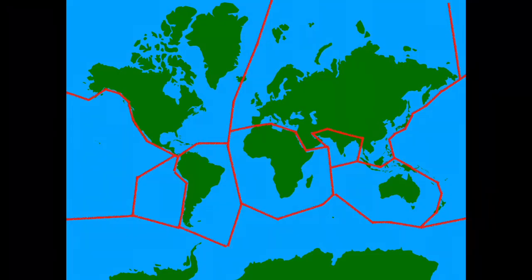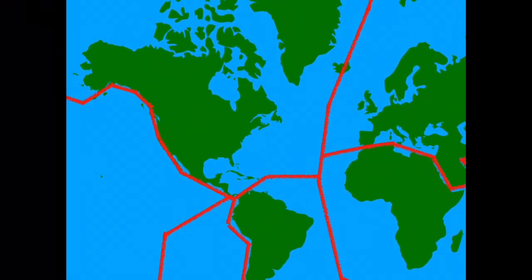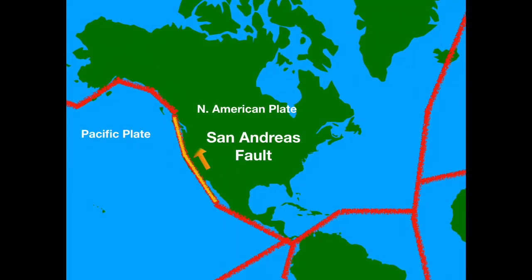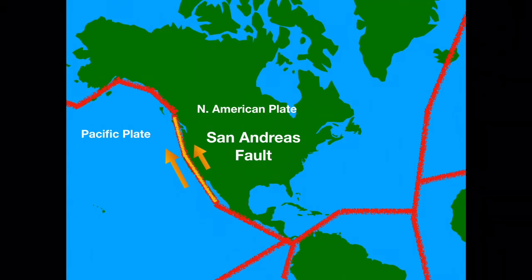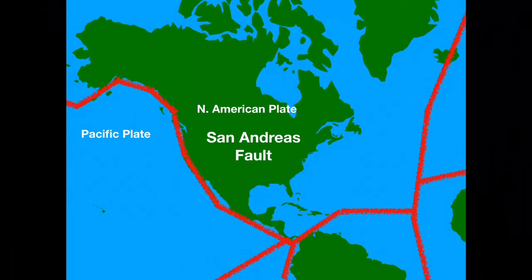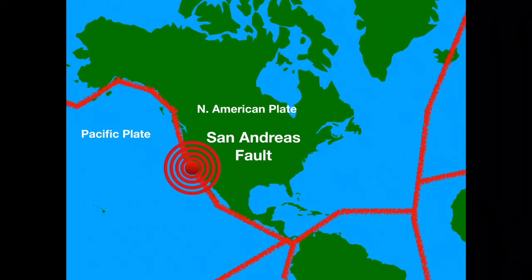An example of this type of boundary is the San Andreas Fault on the west coast of the United States. Along this fault line, the Pacific and North American plates are moving in the same direction. However, the Pacific plate is moving faster and slides and grinds its way past the North American plate. The 1906 San Francisco earthquake had a magnitude of 7.8, resulting in the death of 3,000 people and the destruction of over 80% of the city, which lies along the San Andreas Fault.